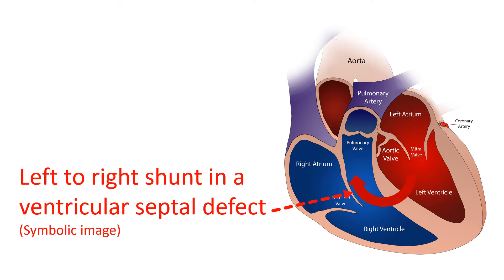This can change in birth defects of the heart when the origin of the blood vessels and position of the heart chambers can be abnormal. There could also be mixing of blood from both sides of the heart when there is a defect in the wall between the chambers. This mixing of blood is called shunts — it could be a left-to-right shunt, right-to-left shunt, or bidirectional shunt depending on the type of birth defect.